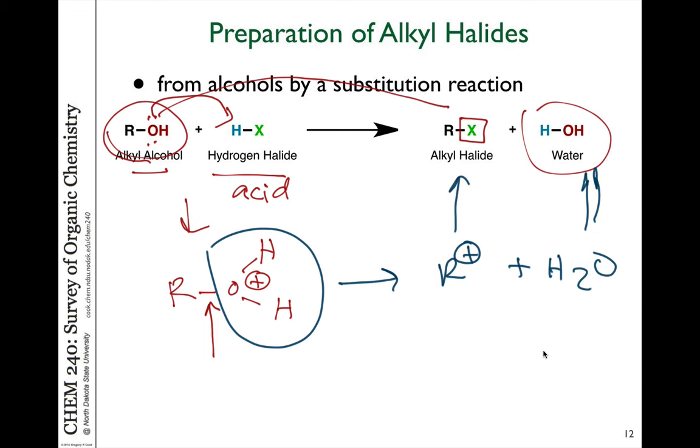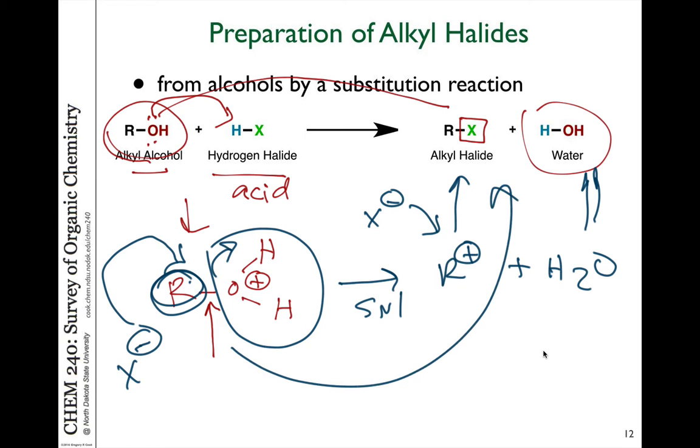Or if this carbon is not suitably substituted to do SN1 substitution, it could undergo SN2 substitution directly if it's a less hindered carbon with the halogen reacting directly before the OH leaves. That would be an SN2 process. Both of these mechanistic pathways are possible.